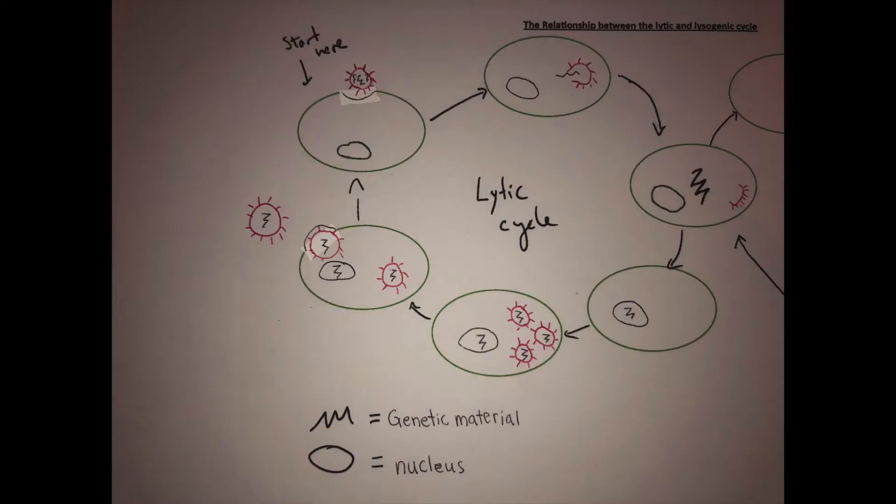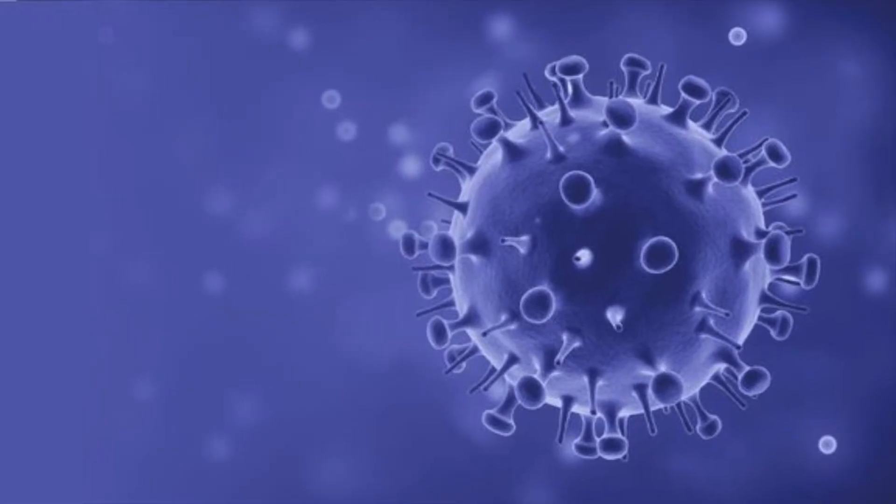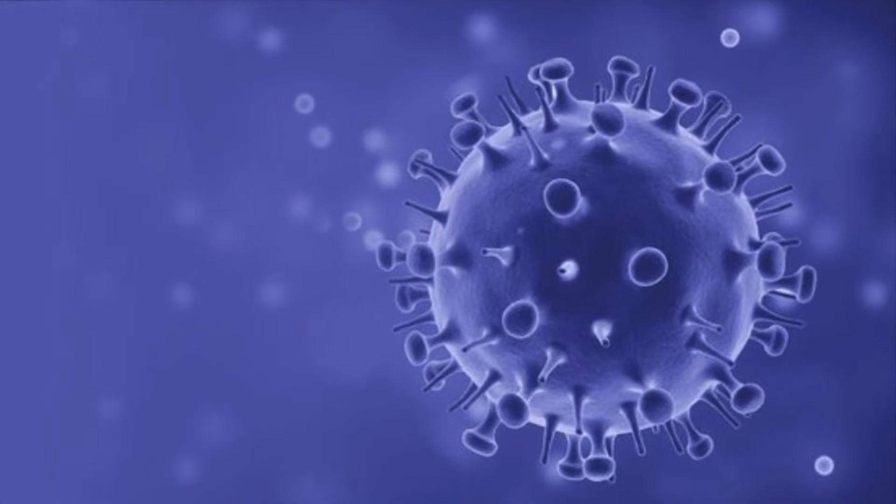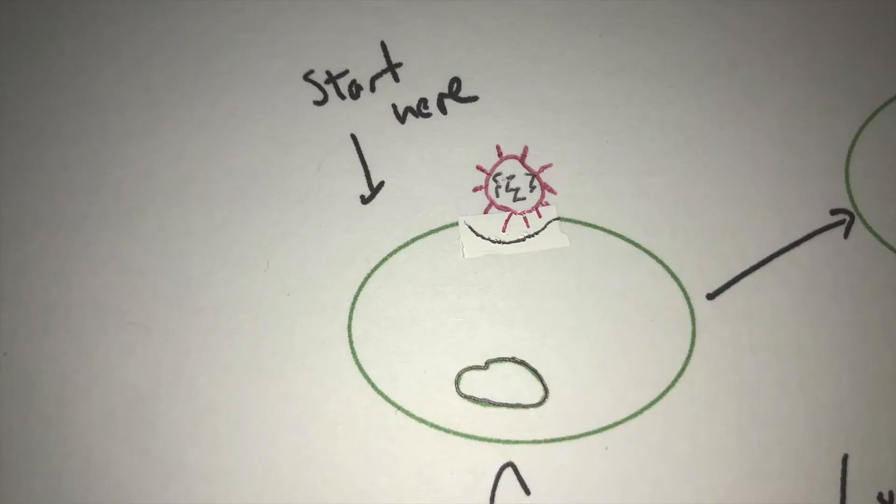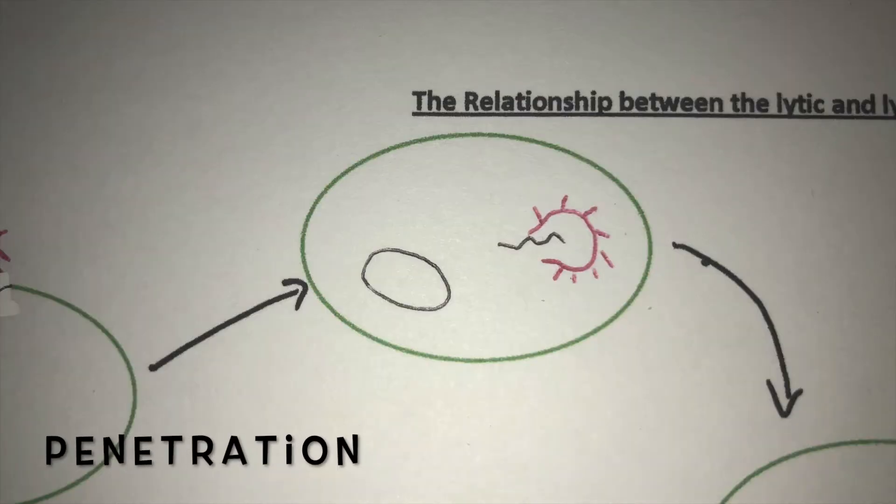When a virus reproduces through the lytic cycle, it goes through six stages. An example of a virus that has a lytic cycle is influenza. When an animal virus reproduces through the lytic cycle, the first stage is attachment, where the virus attaches its protein spikes to the receptors of the host cell. The second stage is penetration, where the envelope of the virus fuses with the membrane of the host cell, and the capsid is released into the cell.